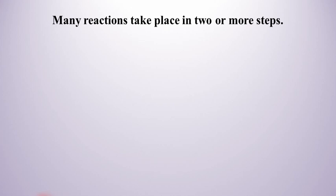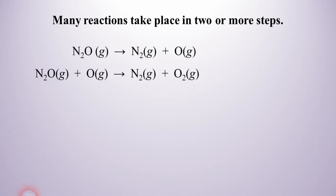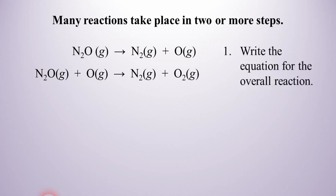Welcome back to AP Chemistry. In this video we're continuing our discussion from last time where we're going to take a look at how chemical reactions can happen in two or more steps. In this particular reaction we're going to look at, we can see that there are two steps involved, and usually when we have one of these reaction mechanisms we're often asked to write the equation for the overall reaction.